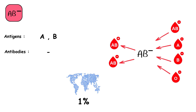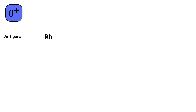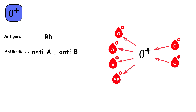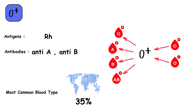O positive blood type has the RH antigen but lacks A and B antigens on the red blood cells, with both anti-A and anti-B antibodies in the plasma. These individuals can receive blood from O positive and O negative donors, and can donate to O positive, A positive, B positive, and AB positive recipients. O positive is the most common blood type, with about 35% of the global population having this blood type.